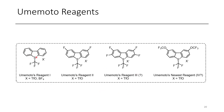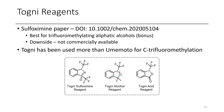Umemoto-type reagents have a dibenzothiophene structure bearing a CF3 group, with a triflate or tetrafluoroborate counterion. Umemoto has developed several versions, the newest being a bis-OCF3-containing derivative, developed for a combination of yield and stability. Togni reagents are hypervalent iodine reagents; the two early ones are the Togni alcohol reagent and the acid reagent, both commercially available and easily prepared using TMS-CF3. A more recent sulfoxime reagent was developed specifically for trifluoromethylation of aliphatic alcohols, though it is not commercially available and requires many steps to synthesize.